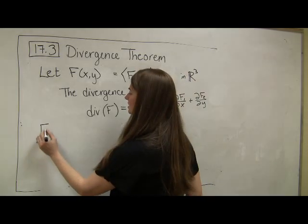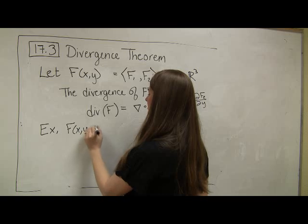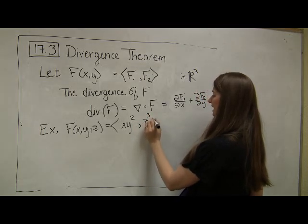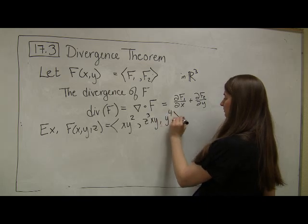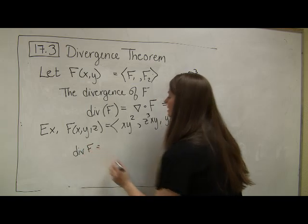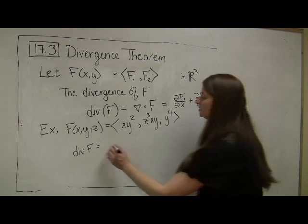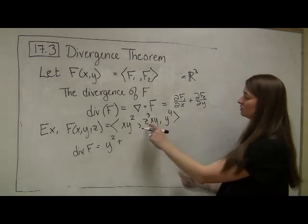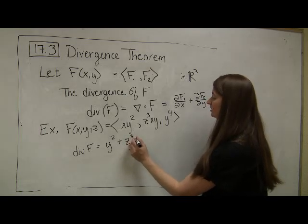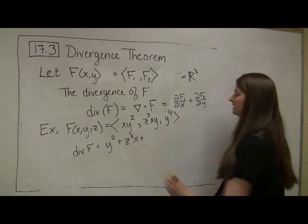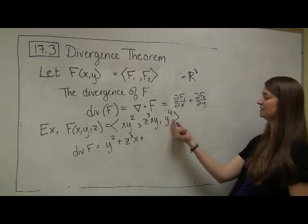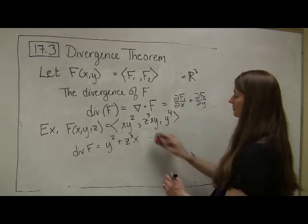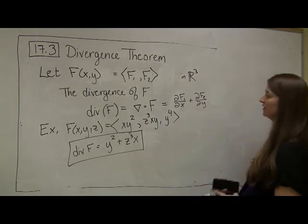Let's do a quick example. Let's say we have a vector field in R3 given by xy squared comma z cubed xy comma y to the fourth. Then, if I want to know what is the divergence of F in this case, I'm going to take the partial derivative of this first component with respect to x, and that gives me y squared, and then I'm going to add the partial derivative of the second component with respect to y, and so treating z and x as constants, that's going to give me z cubed x, plus the partial derivative of the third component with respect to z. There are no z's here, so I treat the y to the fourth as a constant, which just gives me zero. I think it's a relatively straightforward computation now that we're masters of partial derivatives.